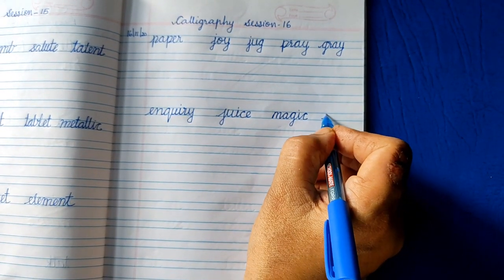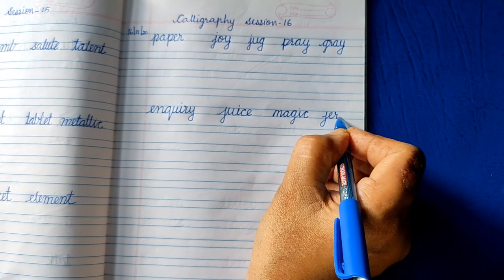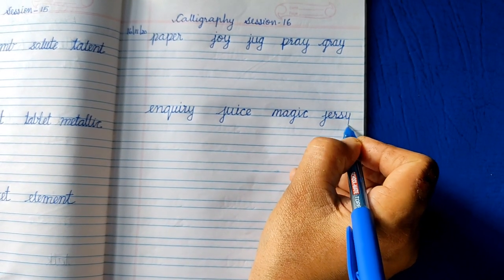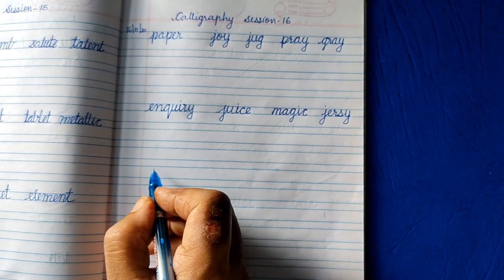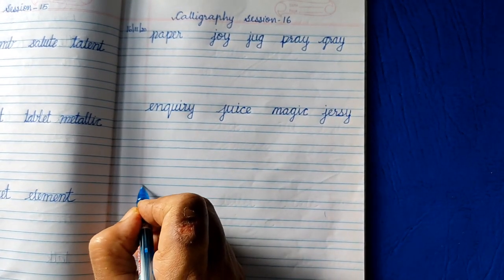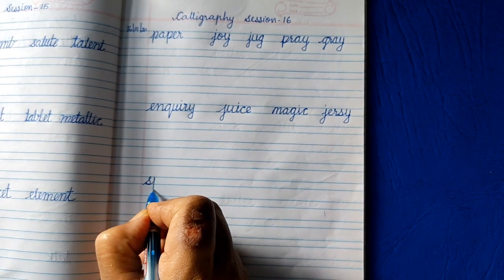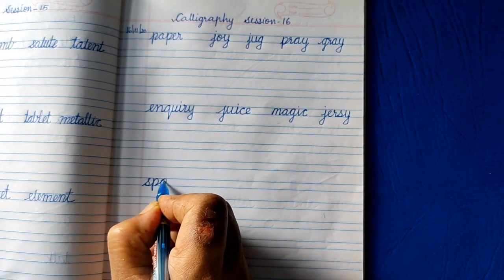J-E-R-S-Y, jersey. Again you leave three lines for writing. Next we'll start here. S-P-O-N-G-E, sponge.